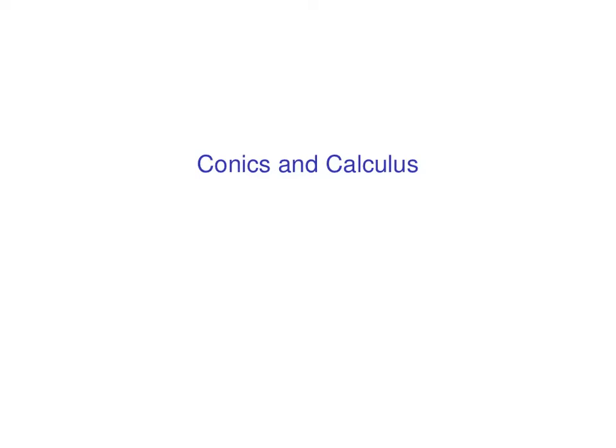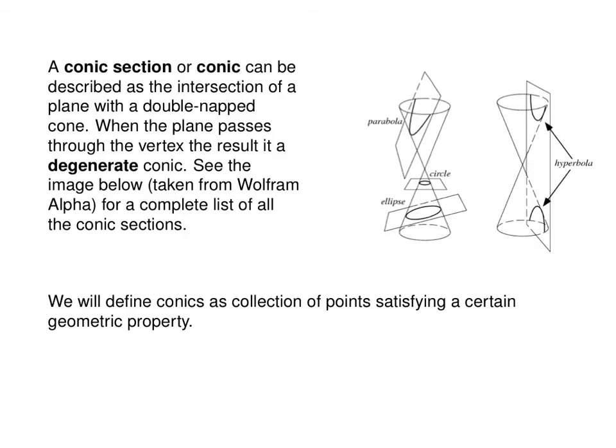In this lesson, we will review conic sections, which is a topic you probably saw in an earlier course. A conic section, or a conic, can be described as the intersection of a plane with a double-napped cone. When the plane passes through the vertex, the result is called the degenerate conic.